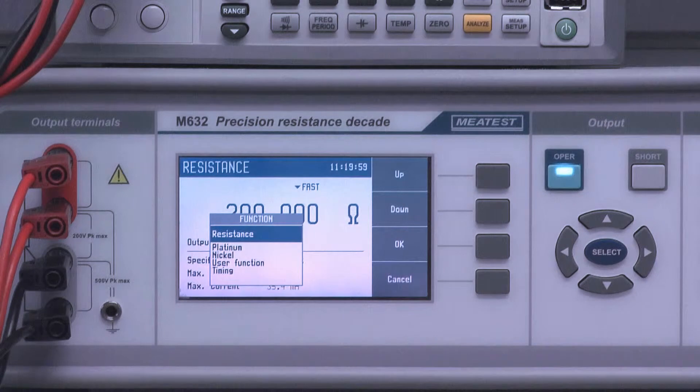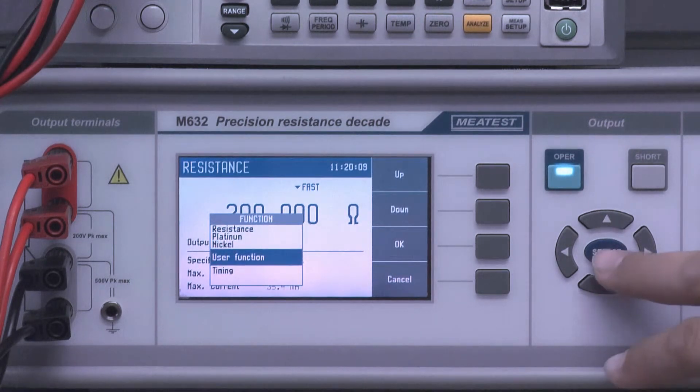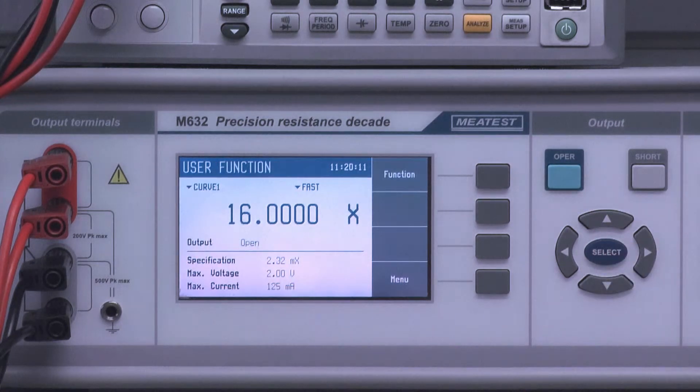As you can see, the M632 can be a resistance standard, an RTD simulator of platinum and nickel sensors, or you can set it up using your own functions, which can be really useful for calibration of specific resistance-based sensors.